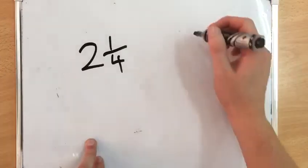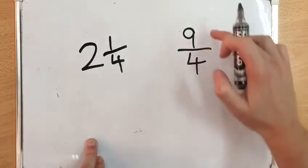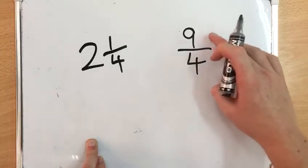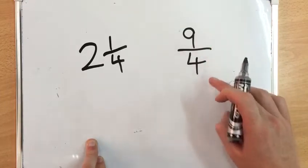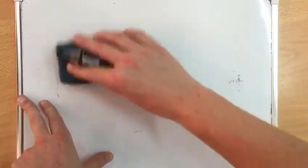An improper fraction is where the numerator is bigger than the denominator. An example is 9/4, where the numerator is bigger than the denominator. Today we're going to look at an example of how to change a mixed number into an improper fraction.